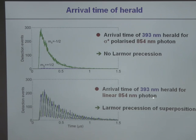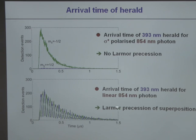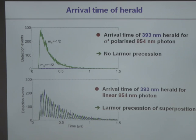When we send linear photons, the arrival time is modulated, representing the Larmor precession of the superposition. The initial superposition is already Larmor precessing, and you have to follow this rotating phase throughout the whole process. Therefore, to map the polarization of the incoming photon to the atom, you must record the arrival time of the herald photon, because it carries a phase that you have to remove in the final state analysis.